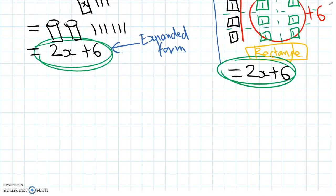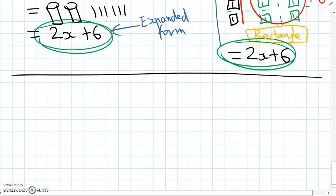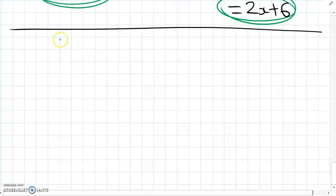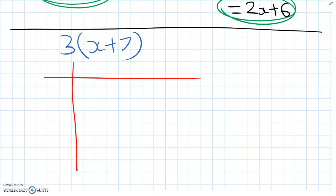Let's practice one more expanding using the grid model here. Let's try expanding three times x plus seven. We'll draw out our grid, and now we'll start with our three, the first factor. To make a three, we're going to need three of the one tiles.